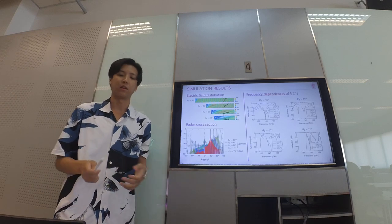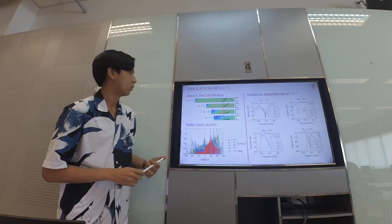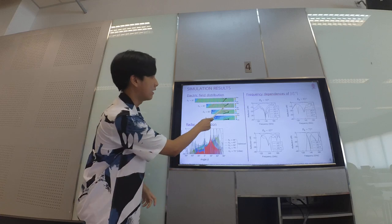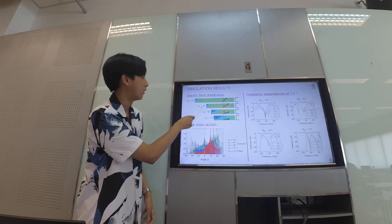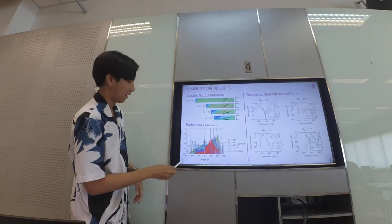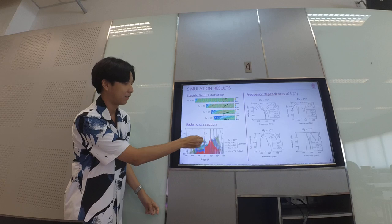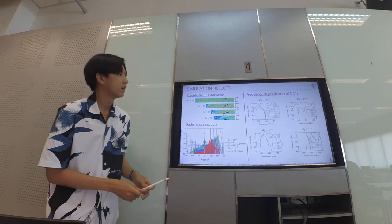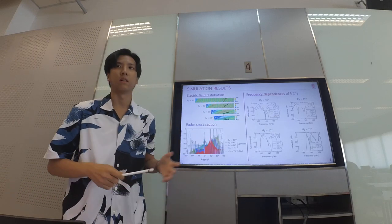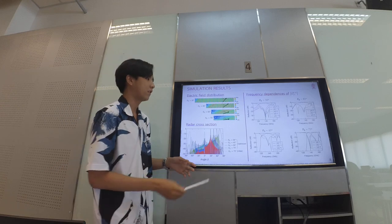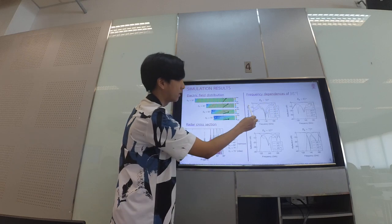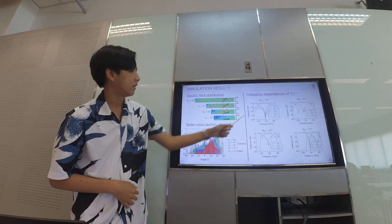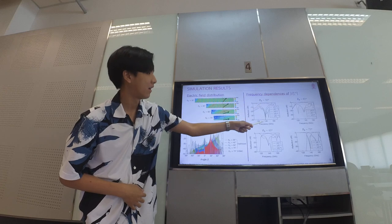This is the simulation result. Starting with the electric field distribution, you can see the plane wave reflects in the desired direction, corresponding to the target angle. For the radar cross-section, the parasitic reflections have been suppressed lower than the main reflection. Looking at the frequency response of each reflector, focusing on the main line, at 140 GHz there is a strong reflection peak.